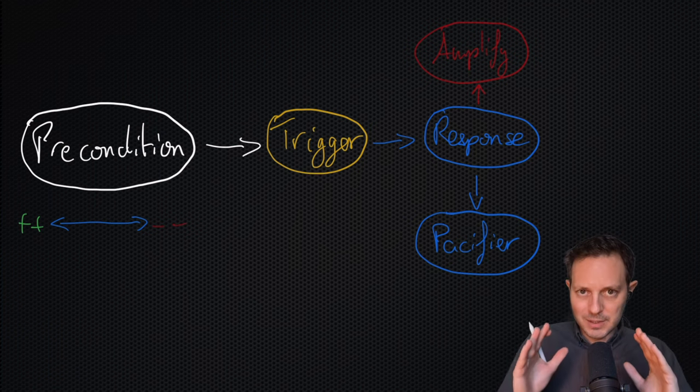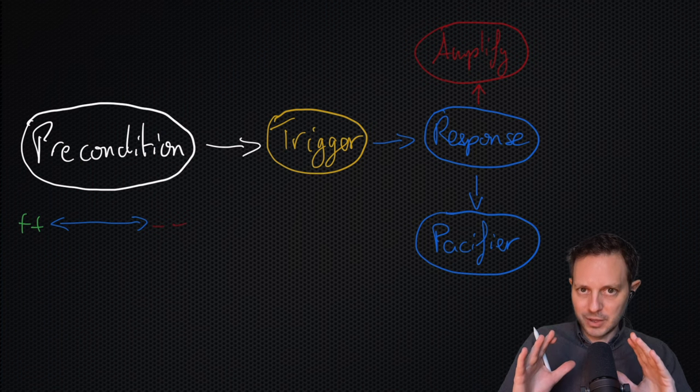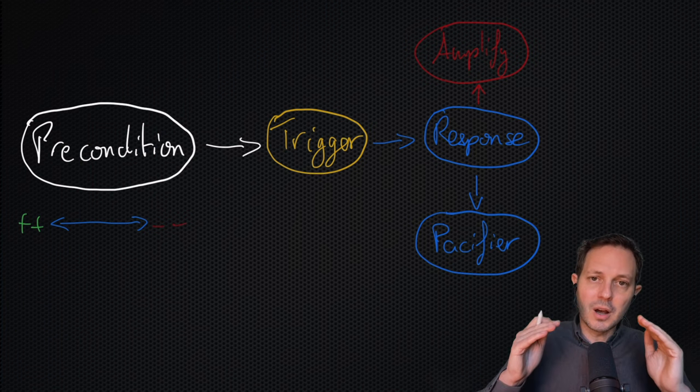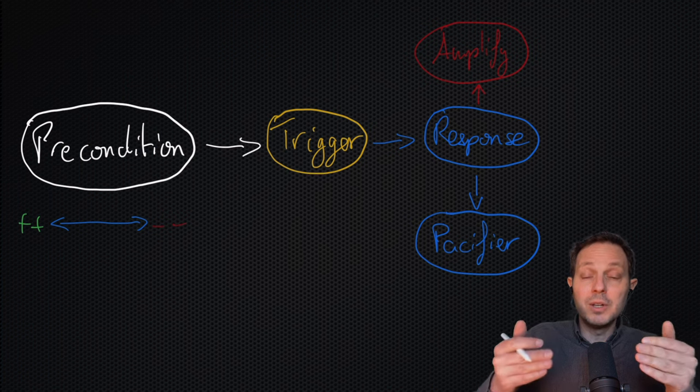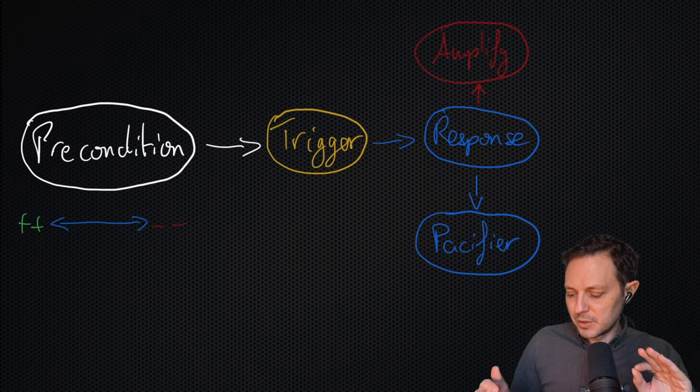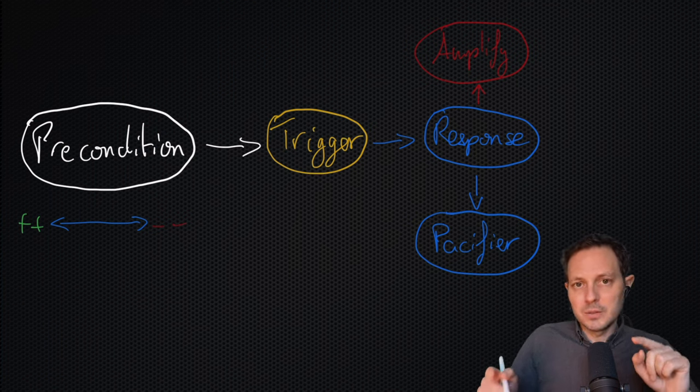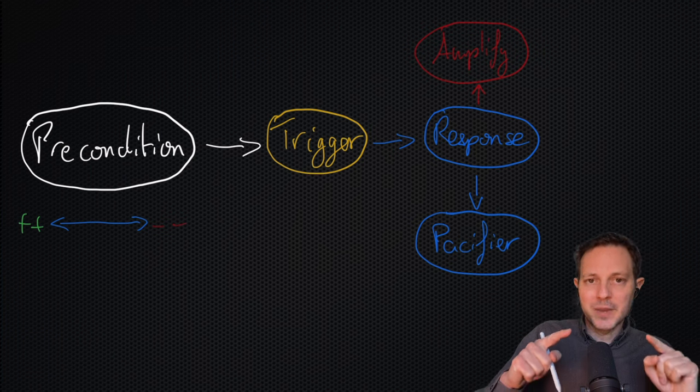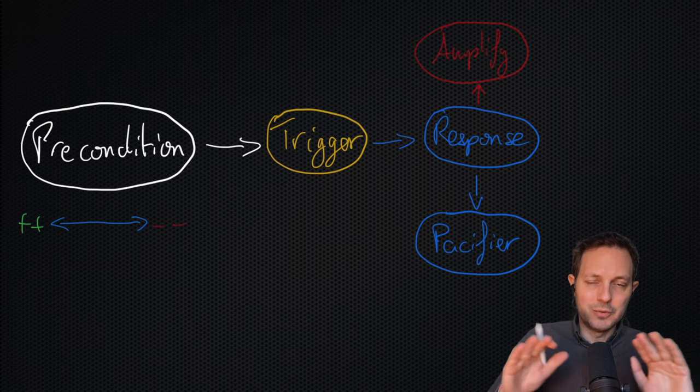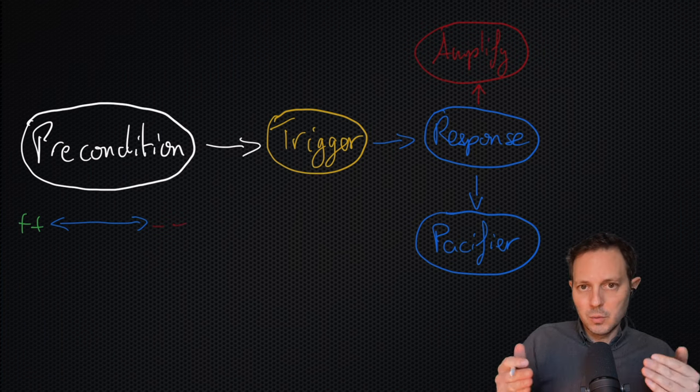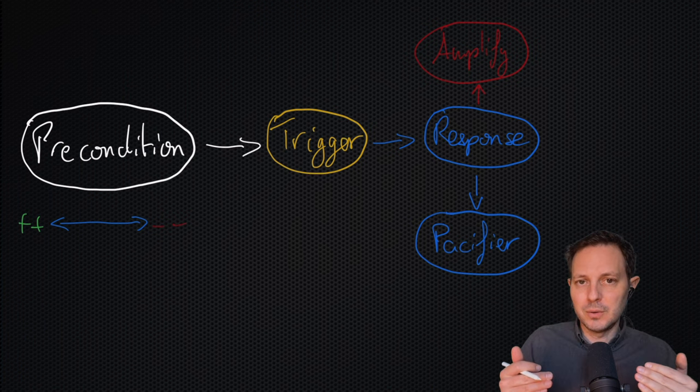But if we can learn to simply sit a bit more with the discomfort, then it's much harder for the other person to manipulate us because we're no longer reacting the way we usually react. If we're willing to live with the discomfort of the response caused by the trigger, instead of panicking to try to remove all of the response, well, we're regaining some control on our life.